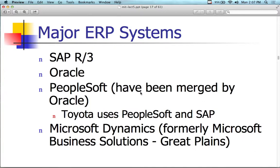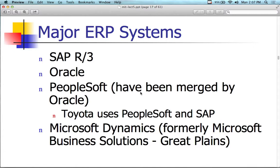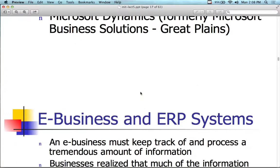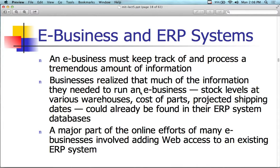Some major vendors in this area: SAP, obviously; Oracle; PeopleSoft, which merged with Oracle. Toyota uses PeopleSoft and SAP. Microsoft Dynamics, formerly Microsoft Business Solutions. This slide is about two and a half years old, so it's hard to tell which companies are still around — companies come and go. E-business is also part of ERP; an e-business must keep track of its processes and all information associated with accounting, sales, and marketing.